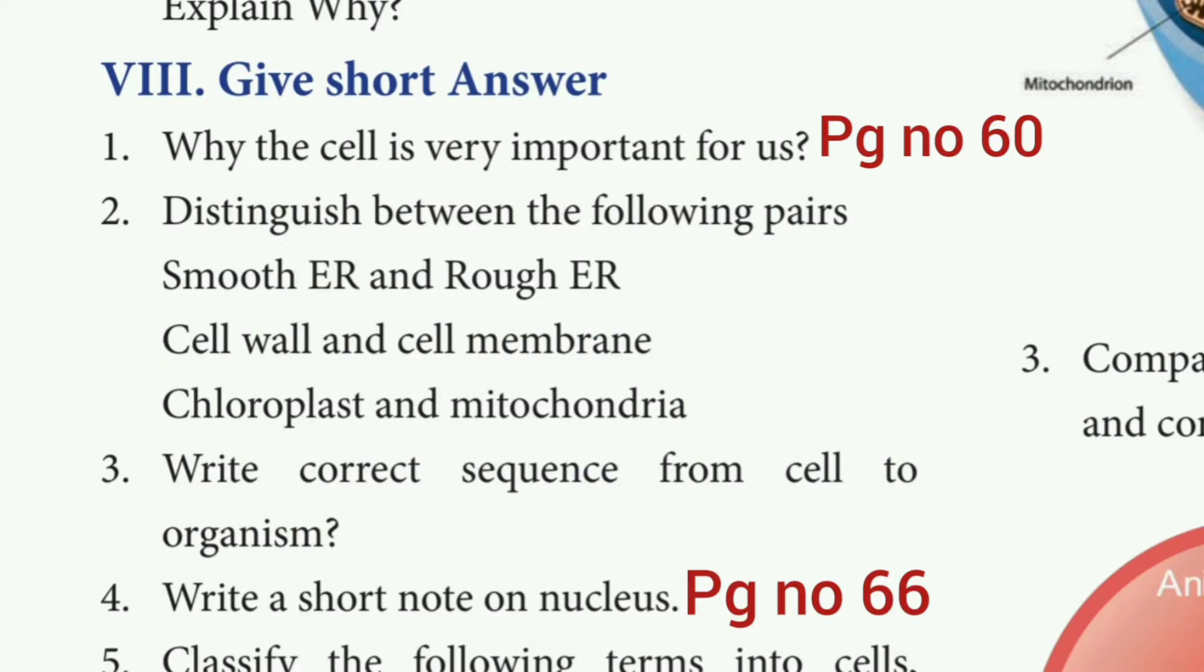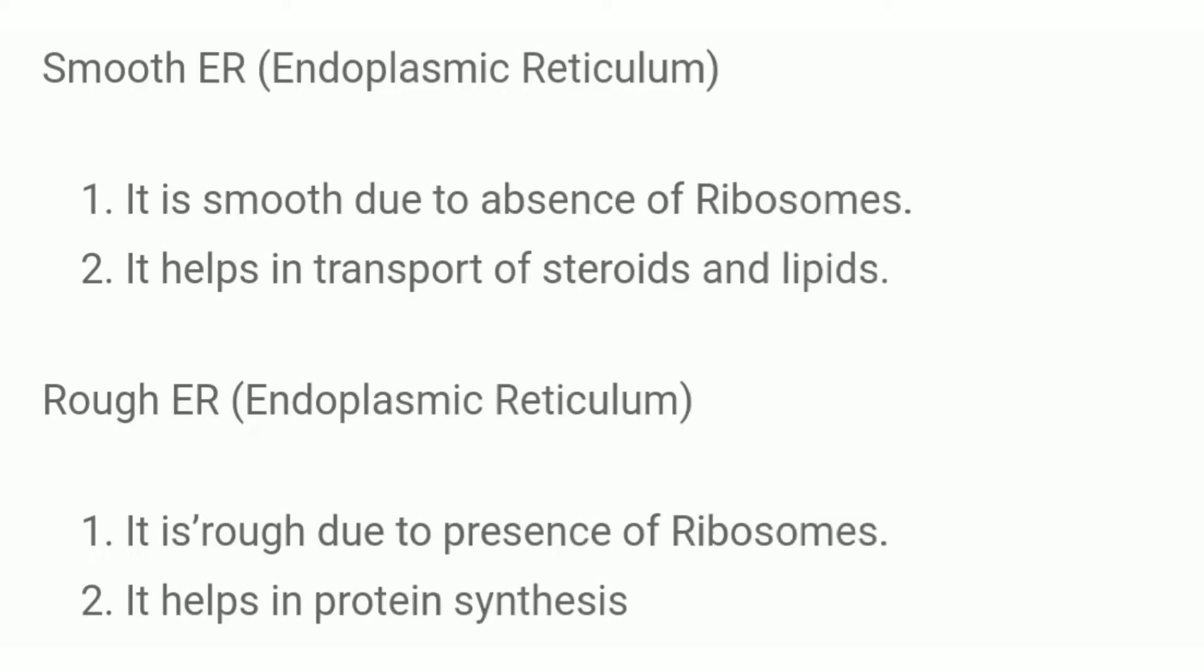Second question: Distinguish between the following parts. First one, smooth ER and rough ER. The answer is smooth ER: It is smooth due to the absence of ribosomes. It helps in transport of steroids and lipids. Then rough ER: It is rough due to the presence of ribosomes. It helps in protein synthesis.